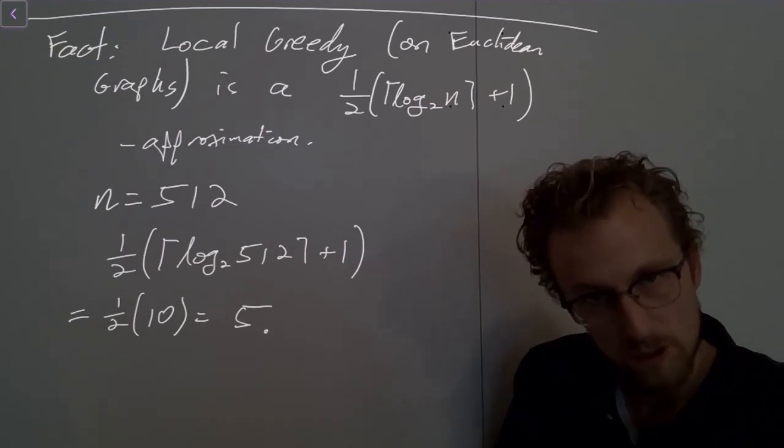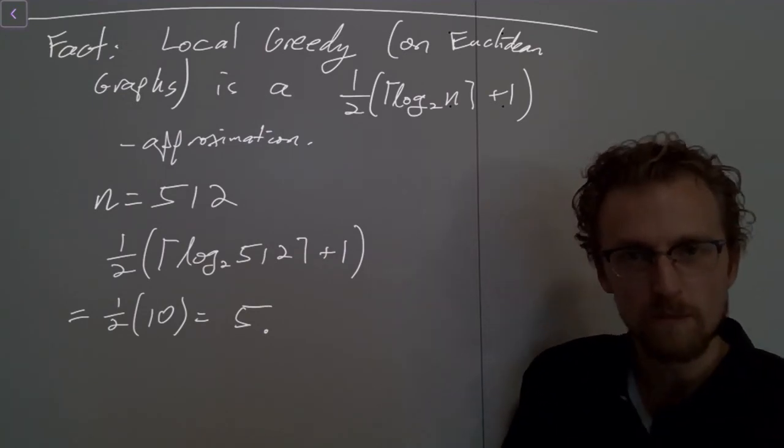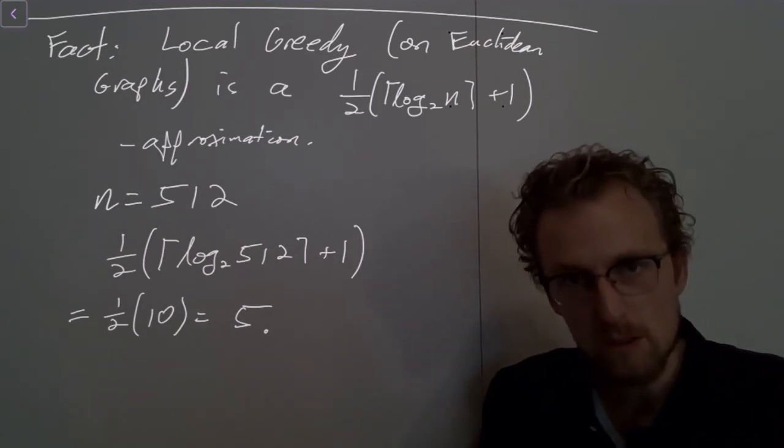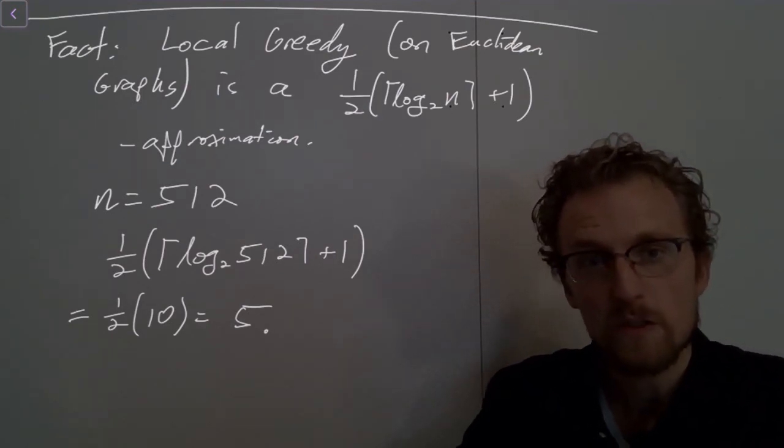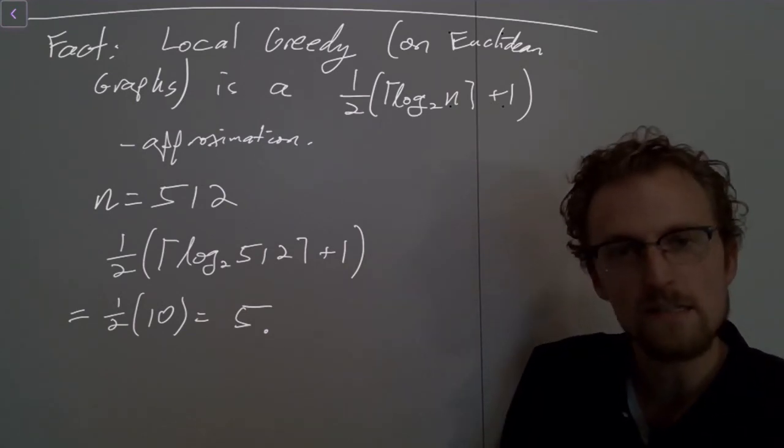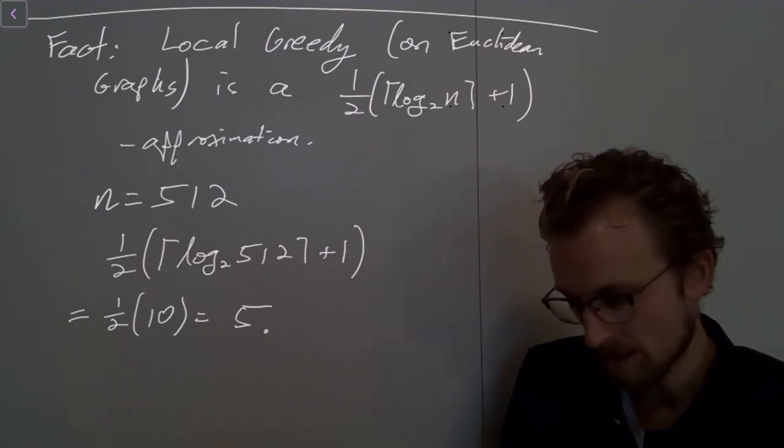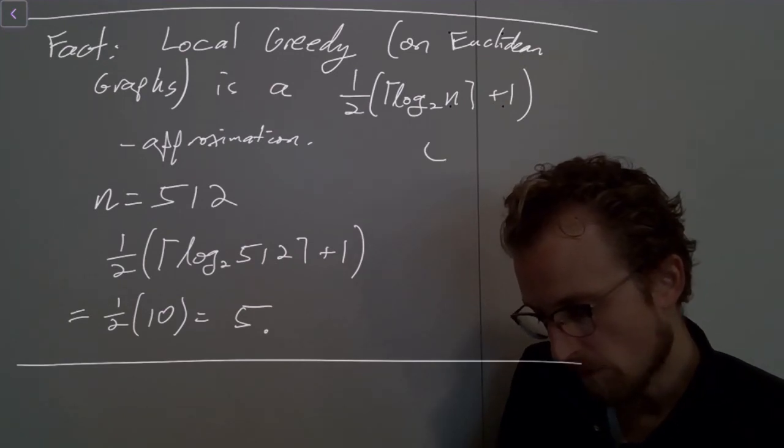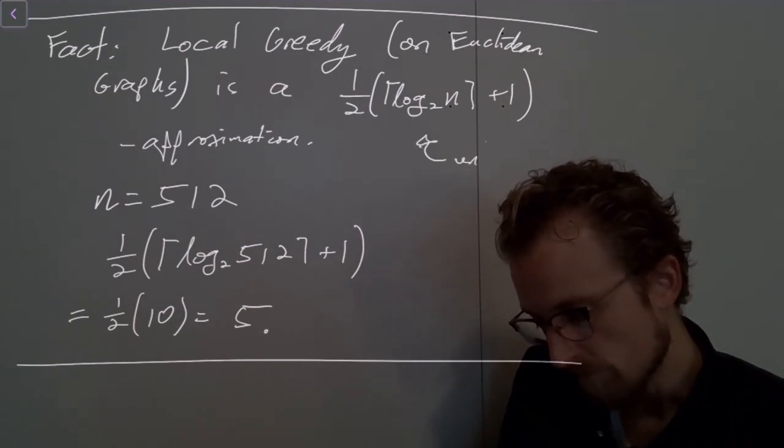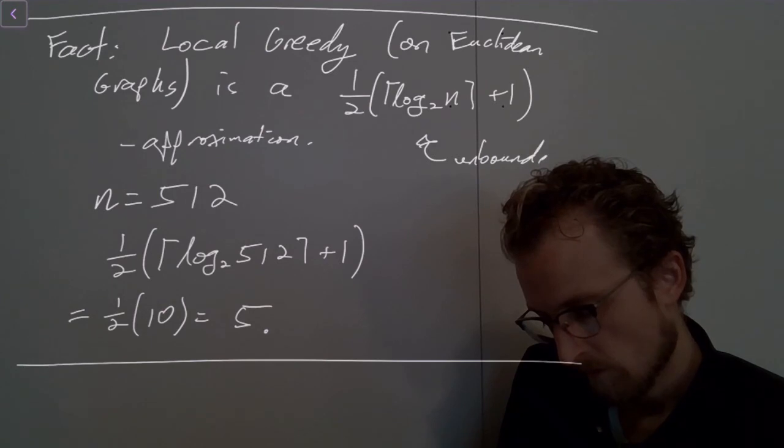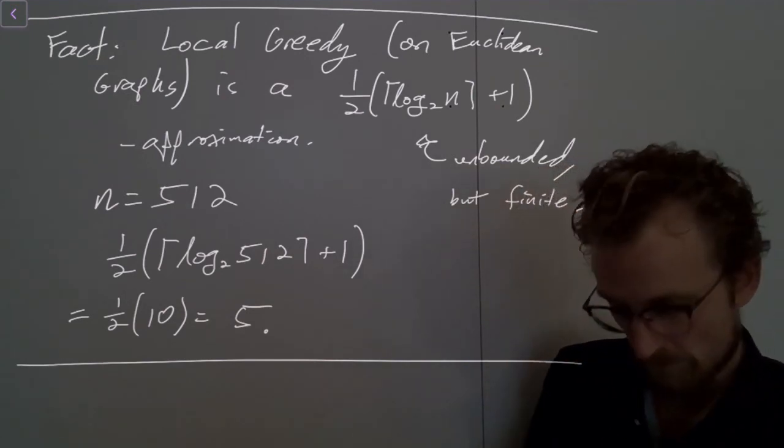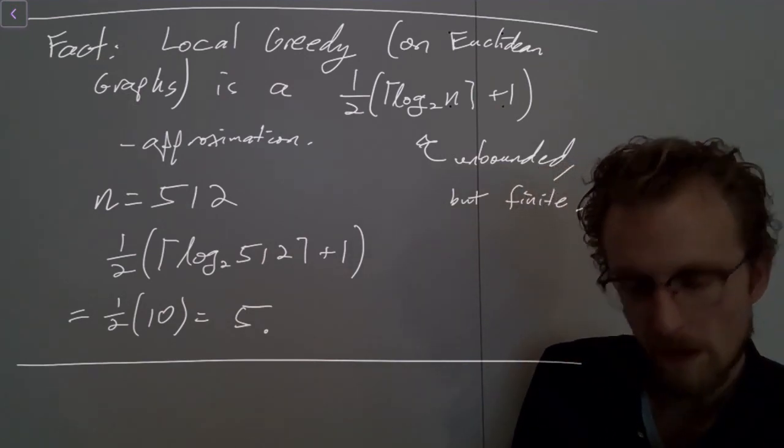And there's a problem here, and that's that the approximation ratio is not bounded. So as n gets larger and larger and larger, the approximation ratio does get worse, but at least we have this nice guarantee. So unbounded approximation ratio, but at least finite. So let's see if we can do better. It turns out we can. We can do considerably better than this.